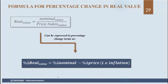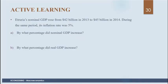For example, if you have a 10% increase in your nominal income but prices increase 20%, your real income is going to fall by 10%. In our example, Atruria's nominal GDP rose from $42 billion in 2013 to $45 billion in 2014, and inflation was 5%. Nominal GDP increased by 7.14%. Real GDP increased by the difference: 7.14% minus 5% equals 2.14%.